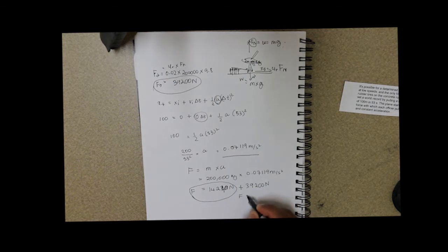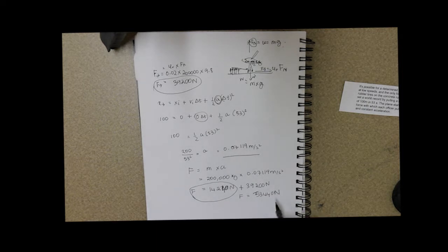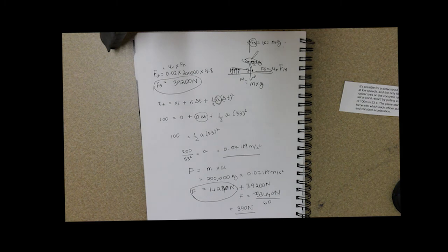We end up with a total force of 53,440 newtons. We divide this force by the number of officers pulling the aircraft, 60 officers, and each officer pulls with a force of 890 newtons. That's our answer.